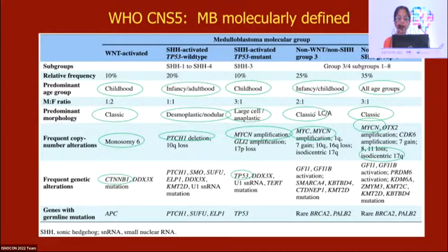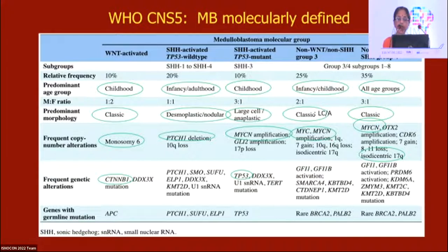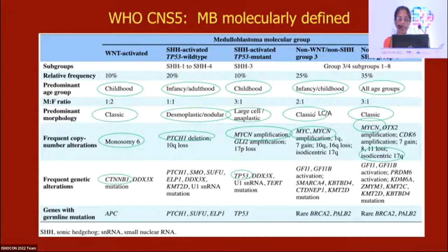Key amplifications have prognostic significance: MYCN and c-MYC amplifications. MYCN amplification is seen in p53-mutant SHH and in Group 3. Both c-MYC and MYCN amplifications are seen in Group 3 and Group 4. In WNT-activated, monosomy 6 or CTNNB1 mutation is the key finding, corresponding to an immunohistochemical marker. P53 mutation is associated with p53-mutant SHH-activated type.